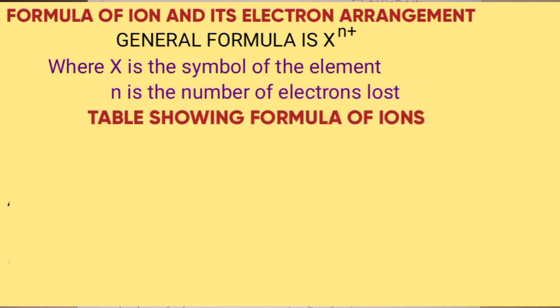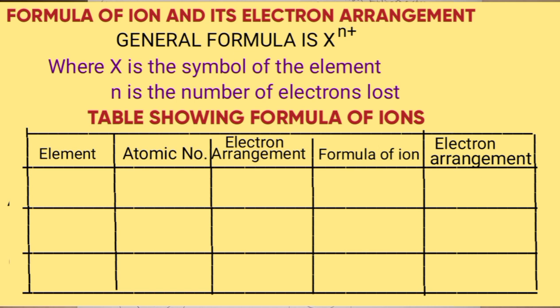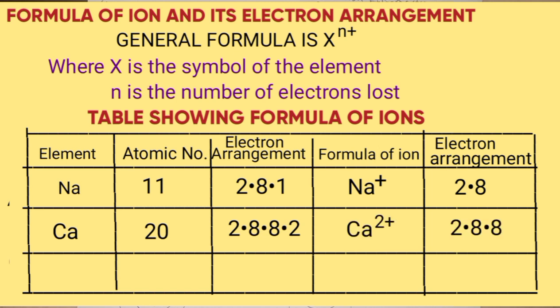The table below shows some of the symbols of the ions of some elements. Example: sodium, atomic number 11, configuration of the atom is 2.8.1, loses 1 electron. The formula of the ion becomes Na+, configuration is 2.8. Calcium, atomic number 20, configuration 2.8.8.2. The formula of the ion will be Ca2+, its arrangement will be 2.8.8. Aluminum, atomic number 13, the atom is 2.8.3. The ion formula is Al3+, and its stable configuration is 2.8.